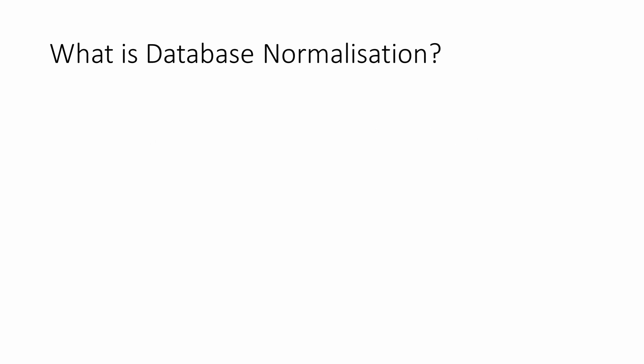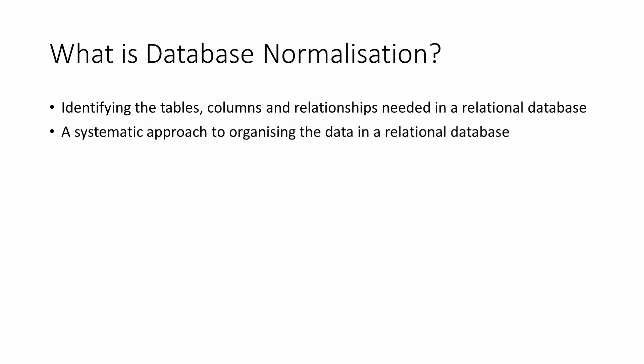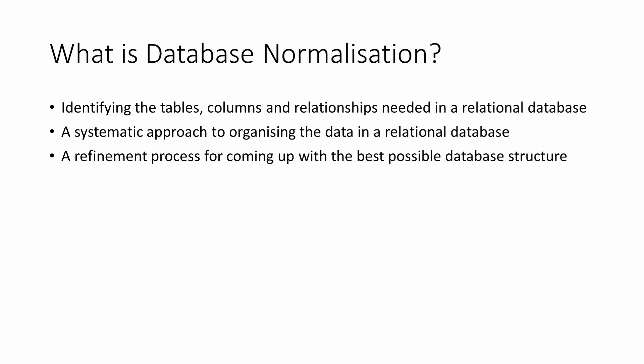So, what is database normalization? Once you've decided what data you need to store in a database, at least in general terms, then you need to work out what tables you're going to need. You need to know what columns each table will have, and you need to identify the relationships between the tables. Normalization is a formal process that will allow you to do this. It's a well-documented, systematic approach to organizing the data in a relational database. It's a refinement process through which you can derive the most efficient structure for a database.